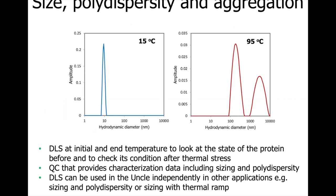In the TM-TIAG application, DLS is performed at the start and end temperature of the thermal ramp. The DLS at the initial temperature allows us to check the condition of the sample prior to thermal stress and see whether the sample is monodisperse and of good quality or already contains aggregates. The DLS at the end temperature gives information about the state of the protein after thermal stress, with both sizing and polydispersity data available. Because DLS is a non-destructive technique, this is a quick QC step done on the exact same sample that provides complementary information to fluorescence and SLS data.